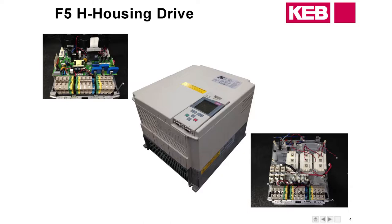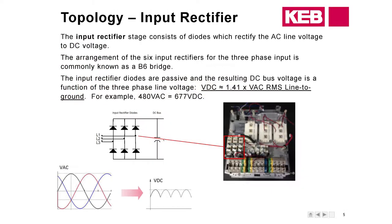Alright, so the input rectifier. If you were to take the keypad and everything off of the drives in front of you and actually look at the power stage board itself, this is what the input rectifier is going to look like. You've got one for each phase, and again this is what takes your AC sine voltage and turns it into a DC voltage.